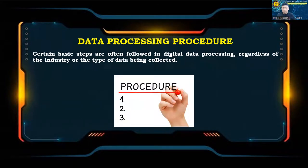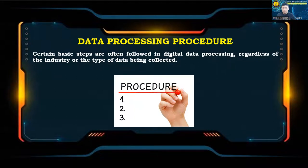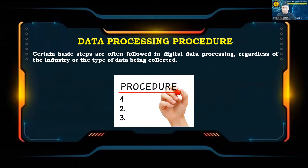Certain basic steps are often followed in digital data processing regardless of industry or data type: data capture (acquisition of data in some format), data conversion (transforming data into digital format), data validation (evaluating data to ensure it is in the correct format), sorting (grouping similar data streams), aggregation (combining data streams), data analysis (processing data using formulas and other transformative techniques), and reporting (creation of human-readable reports).